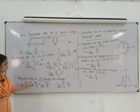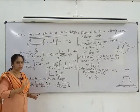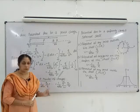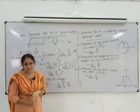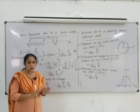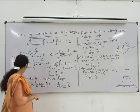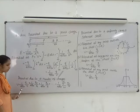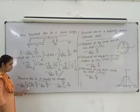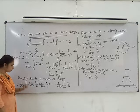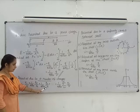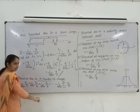Next, potential due to a number of charges. If charges Q1, Q2, Q3 etc. are at distances R1, R2, R3 etc. from a point, then the total potential at that point V is equal to 1 by 4 pi epsilon 0 into Q1 by R1 plus 1 by 4 pi epsilon 0 into Q2 by R2 plus 1 by 4 pi epsilon 0 into Q3 by R3 plus etc.